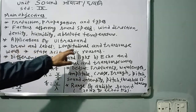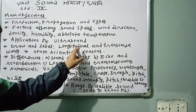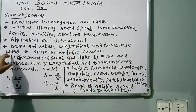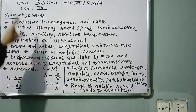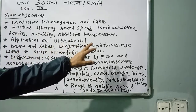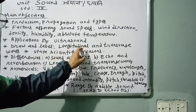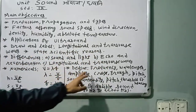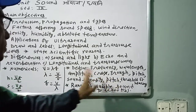In a longitudinal wave, there are compressions and rarefactions. In a transverse wave, there are crests and troughs. Draw and label the longitudinal wave showing compression and rarefaction, and the transverse wave showing crest, trough, and amplitude.